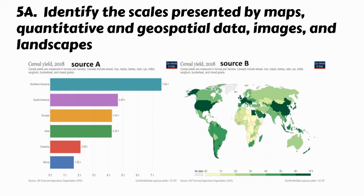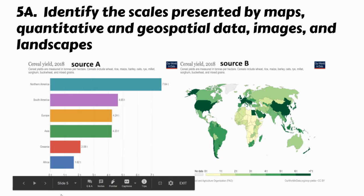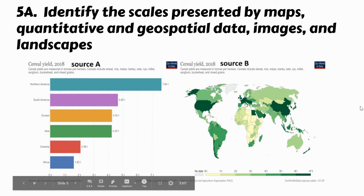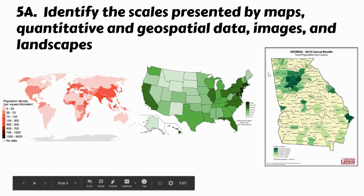You can determine scale of analysis based on graphs as well, not just maps. For a graph showing North America, South America, Europe, Asia, etc., the scale of analysis would be continent or regional. For an FRQ question asking you to identify scale of analysis, you could say both to be safe. And again here — global scale, but scale of analysis is national.